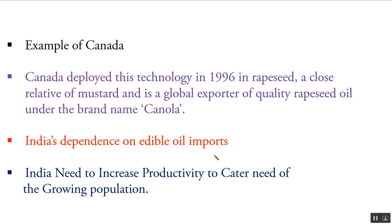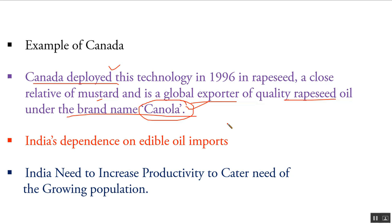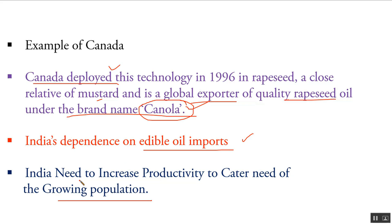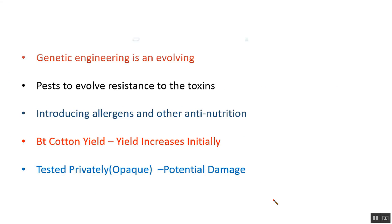Canada deployed this technology in 1996 in rapeseed, a close relative of mustard, and its global export of quality rapeseed oil is sold under the brand name canola. India is also importing this rapeseed oil. India's dependence on edible oil imports would be reduced if it used genetically modified crops. India needs to increase productivity to cater to the needs of its growing population — that is why India needs this technology.